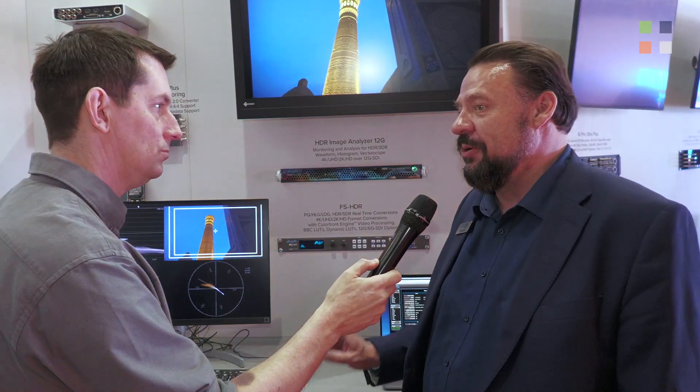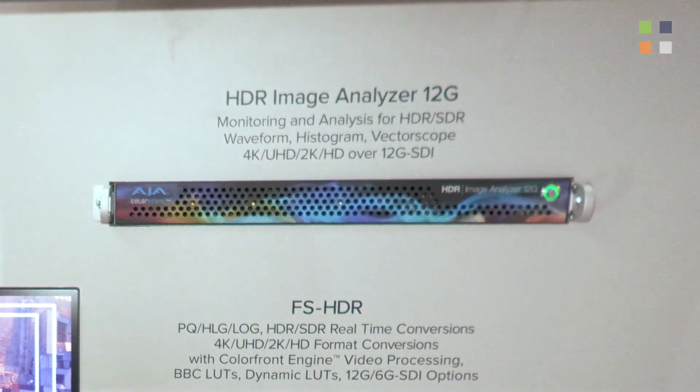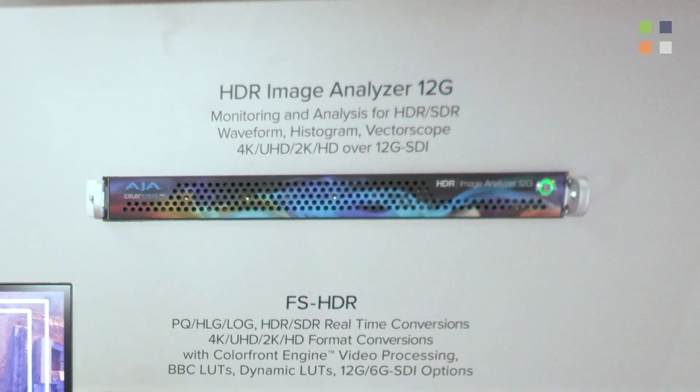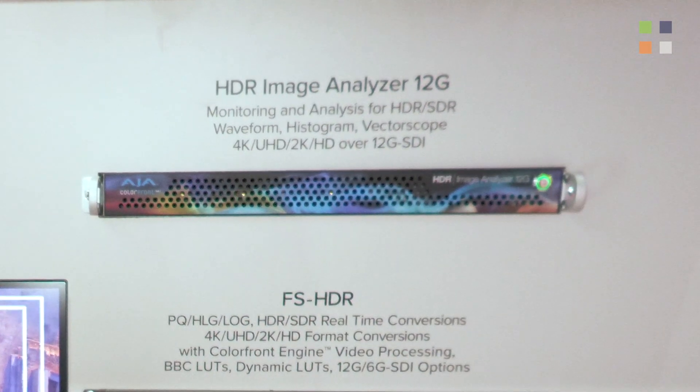So we originally had the HDR Image Analyzer 3G. The purpose of going to 12G is twofold — over time it should be able to do multiple channels of 4K through it, but it gets you into 8K as well. That's pretty important right now because the Olympics coming up this summer will have a lot of 8K workflows. The whole purpose of an image analyzer is to help you make sure you're getting your dynamic range and your color space into the correct broadcast specs.